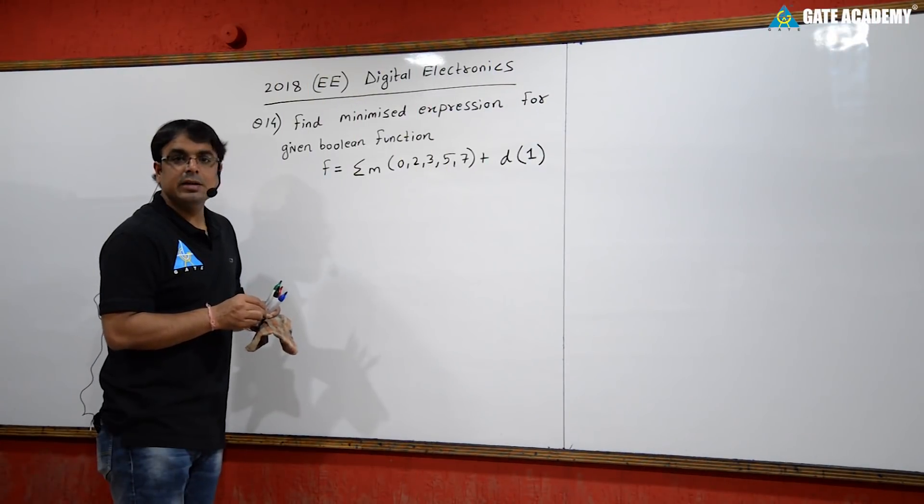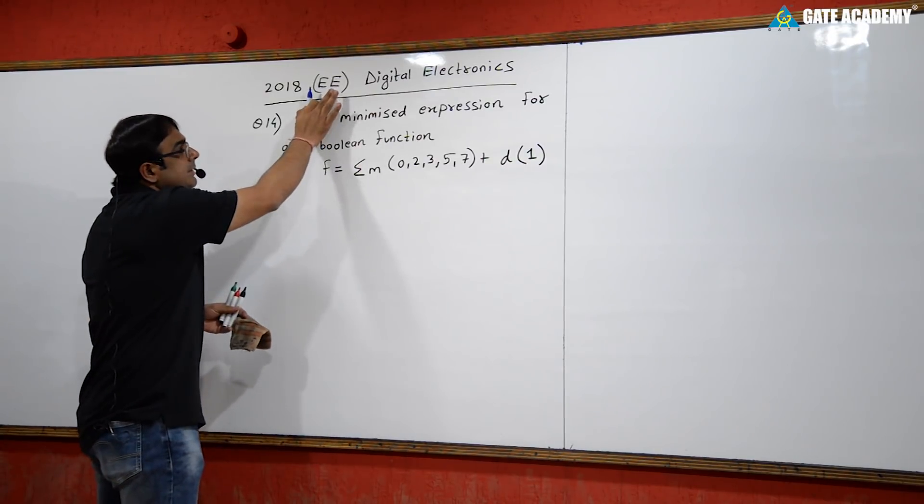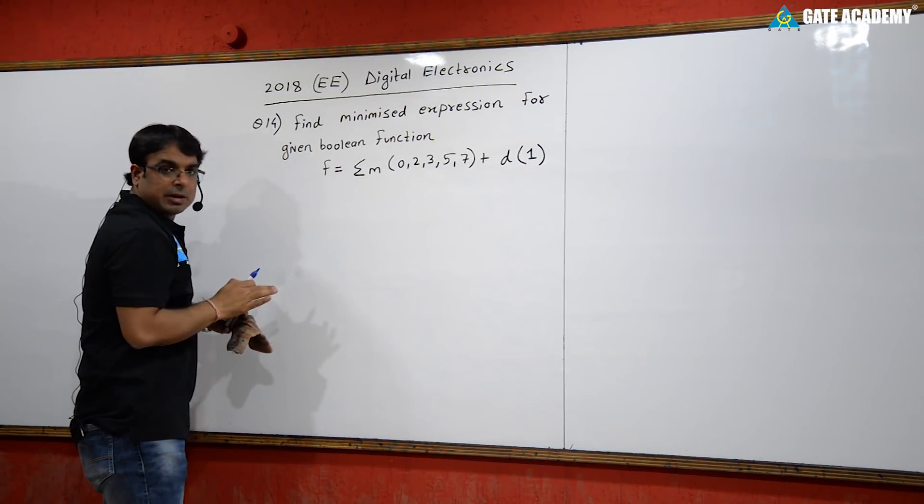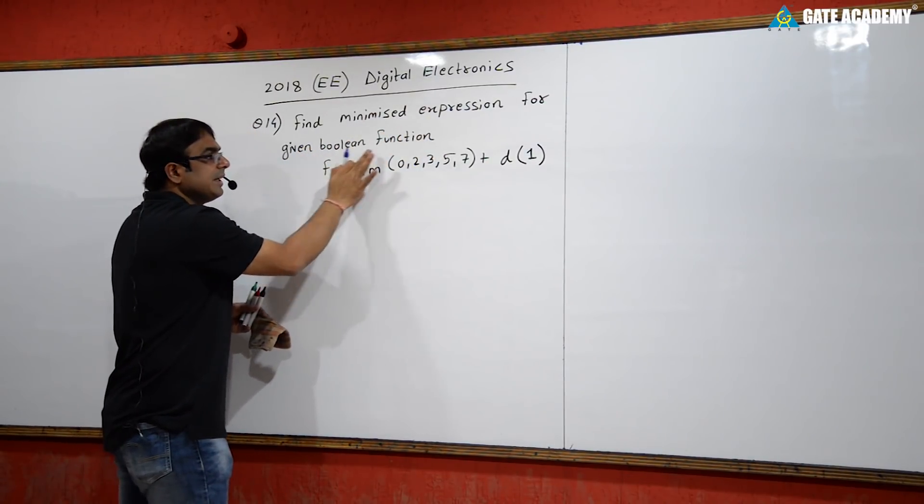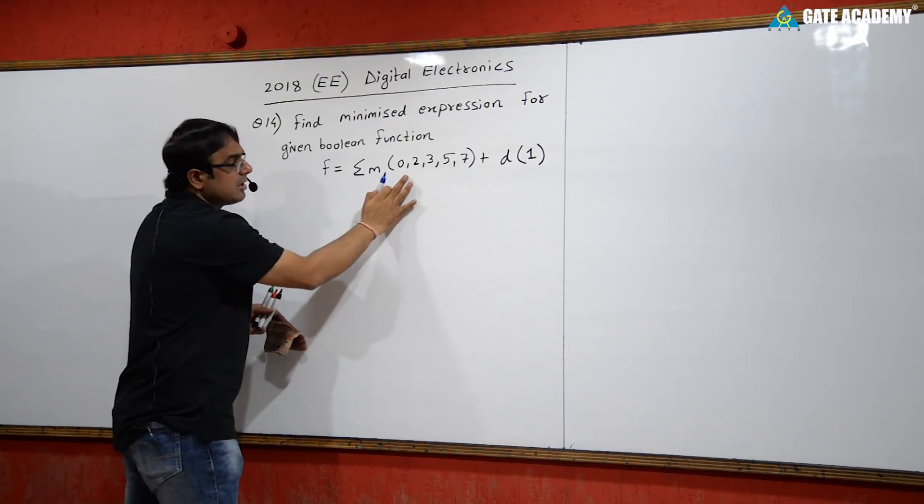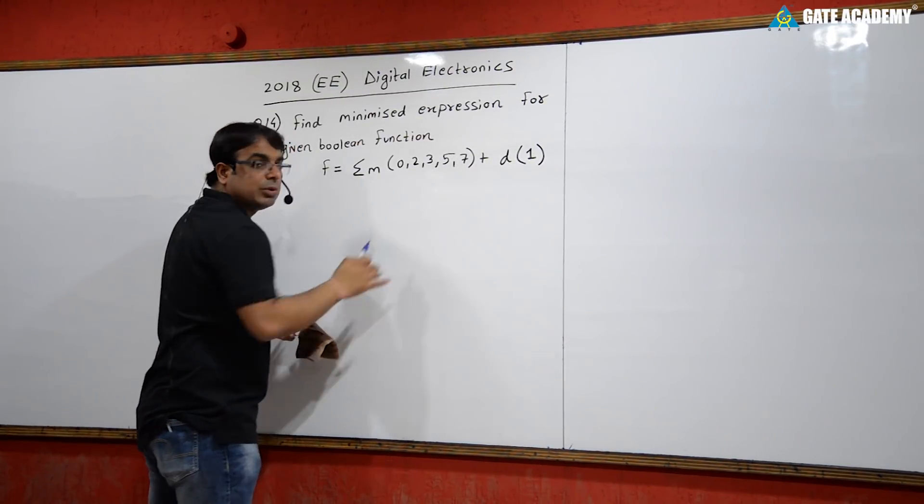This is a 2018 GATE memory-based question for the Electrical branch, question number 14. Find the minimized expression for the given Boolean function with minterms 0, 2, 3, 5, 7 and a don't care.